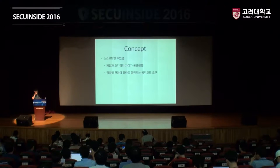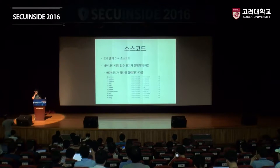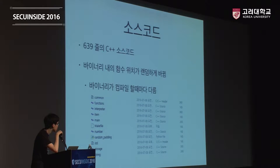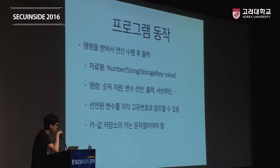컨셉을 잘 유지하기 위해서 컴파일러 환경만 맞춰주면 똑같은 바이너리가 생성되면 문제의 의도랑 어긋나니까, 함수 중간중간에 NOP을 랜덤하게 넣었고요. 참가자한테 C++ 소스코드를 줬어요. 파일명에서도 볼 수 있었듯이 인터프리터라 되어있는데, 사실은 인터프리터는 아니고 버츄얼 머신을 구현한 거예요. 약간 자바스크립트 컨셉이었는데, 여기서 나온 취약점이 제가 며칠 전에 크롬에 제보한 그런 취약점이거든요. 바이너리 함수 위치가 프롤로그에 전부 랜덤하게 박혀서 바이너리를 컴파일할 때마다 다르게 설정을 해줬고요. 이 프로그램의 기본적인 동작은 그냥 명령을 받아서 연산을 수행하고 출력을 해주는 그런 프로그램이었어요.